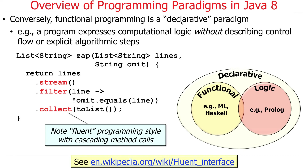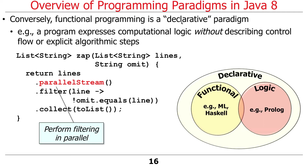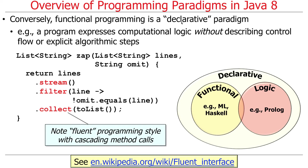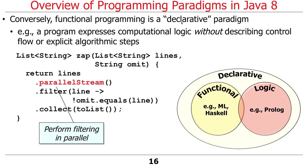Notice that this is fluent-style programming, where you cascade method calls such that each method works off the output of the method before it — a given method's input is the output of the preceding method, like a little pipeline. Unlike the imperative version using the accumulator pattern that was hard to parallelize, this approach is ridiculously easy to parallelize. We simply go from 'stream' to 'parallel stream', and it will magically run in parallel on multi-core machines. Whether that's a win is another story we'll cover in detail later.